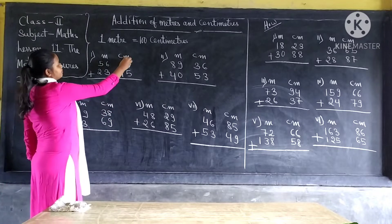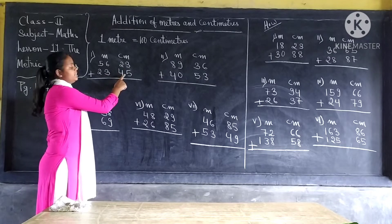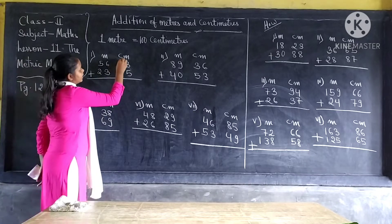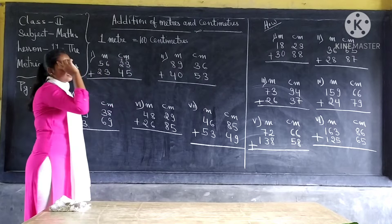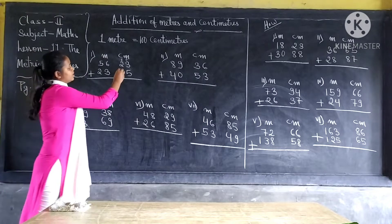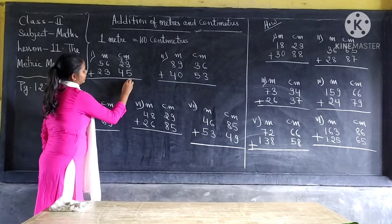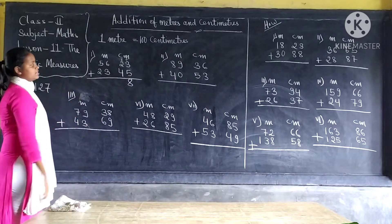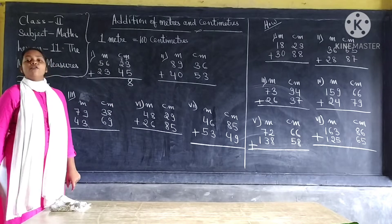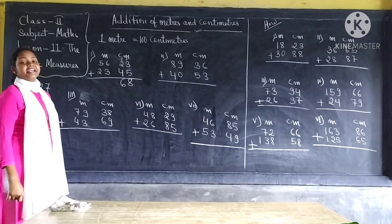Now, under the centimeter, we have twenty-three and forty-five. In your mind, just think of this as tens and ones — only in your mind. Under ones, we have three ones and five ones. Three ones and five ones equal to eight. Under tens, we have two tens and four tens. Two and four equal to six. So we have sixty-eight centimeters.